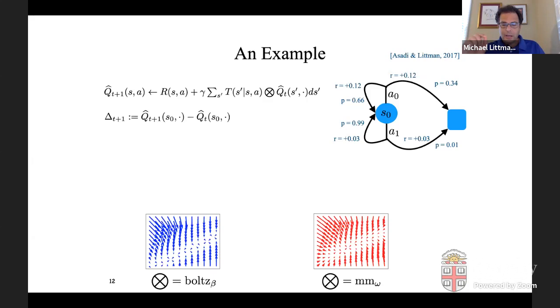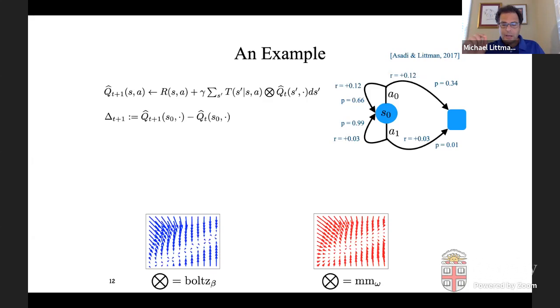So we can ask the question of given a starting Q function, which again, it's just a point, like how much, what's the Q value for action a zero? What's the Q value for action a one? We can plot that on a graph and say, if we apply the Bellman update with this particular summary operator being, well, in one case, Boltzmann and the other case, Mellowmax, where does it move the value function to? Right. It's the Bellman operator is a mapping on value function. So it's going to take our point and it's going to move it to another point in the space.